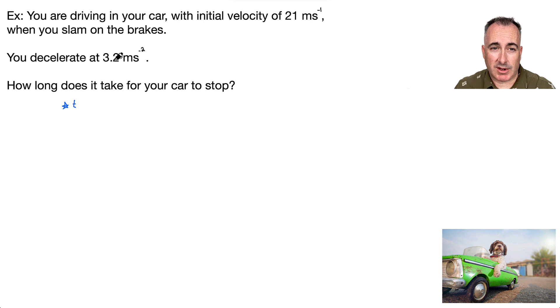Now I decelerate. I know acceleration here. And I know initial velocity. That must be U. If you stop, what does that mean? That means V equals zero. That's the final speed. And this acceleration is going to be 3.2.